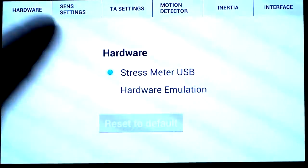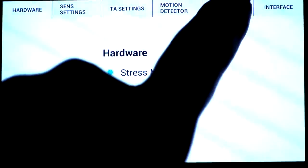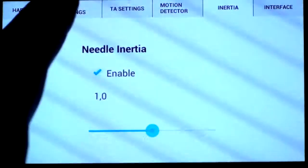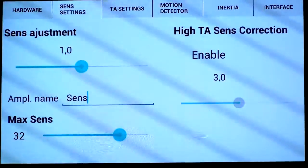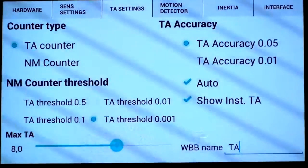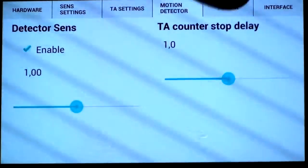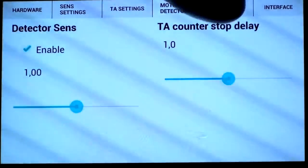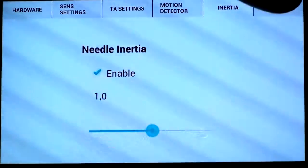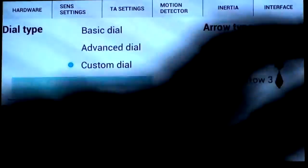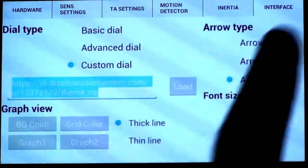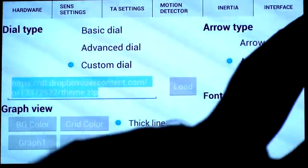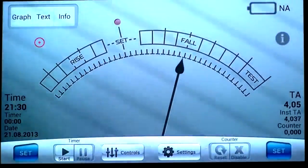Here are the settings: inertia, needle inertia, sensitivity settings, TNT counter settings, motion detector, and interface. Here you see three different dials and three different needle types and font size of the text window.